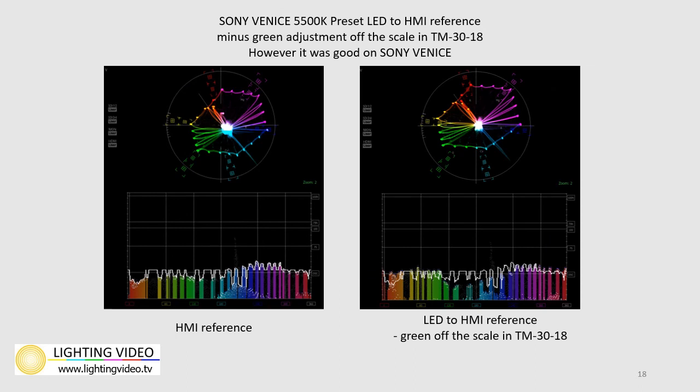In this example, we used an HMI as our reference light source on the Sony Venice, then adjusted the LED to match the HMI chroma response using the HS Scope reference line, matching as close as possible. Ironically, during our calibration we also used the TM30-18 measurements on the color meter to guide us. If we had followed the TM30-18 measurements, we would not have come this close, as it indicated our green values were off the TM30-18 scale — yet they were exactly the value needed for the Sony Venice to closely match the reference HMI source.